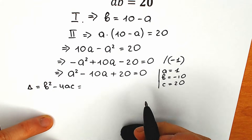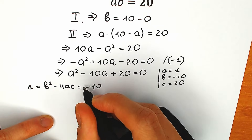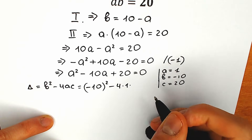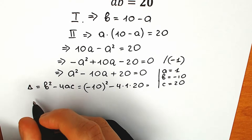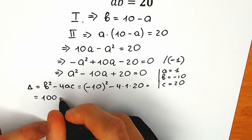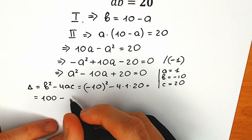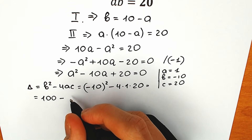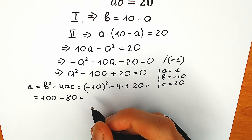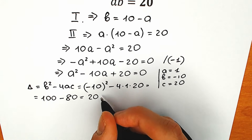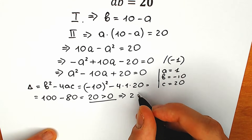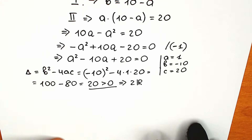Let's plug in our values. B squared: (minus 10) squared equals 100, minus 4 times 1 times 20 equals 80. So the discriminant equals 100 minus 80, which is 20. This means the discriminant is greater than zero, so we can expect two real number roots.